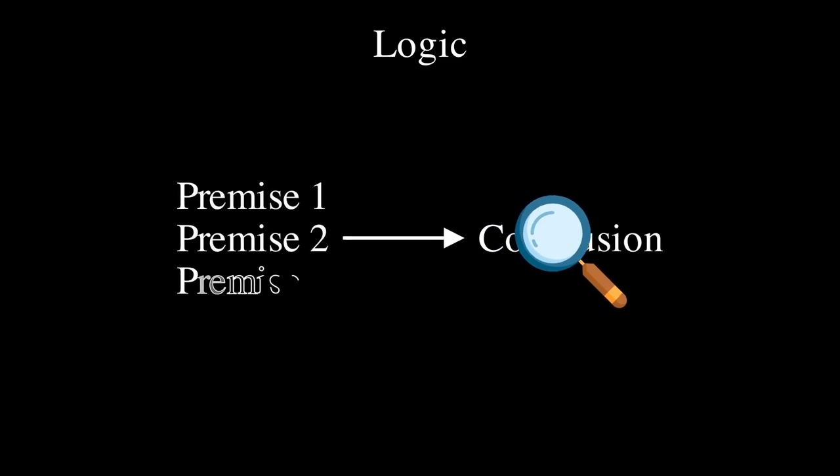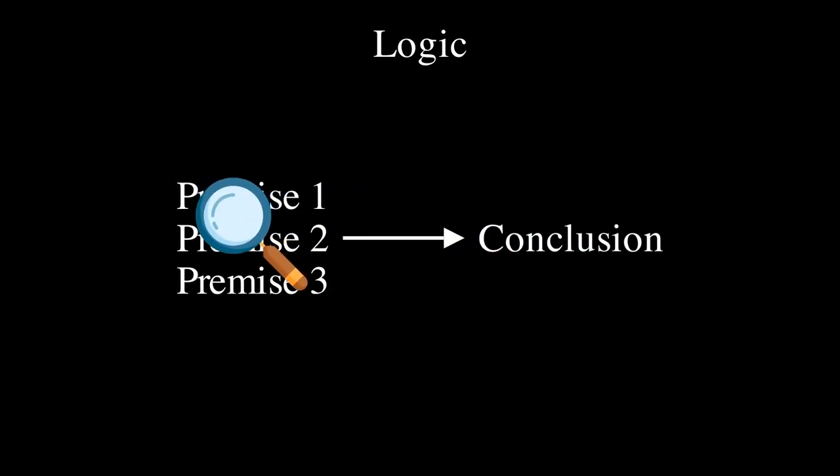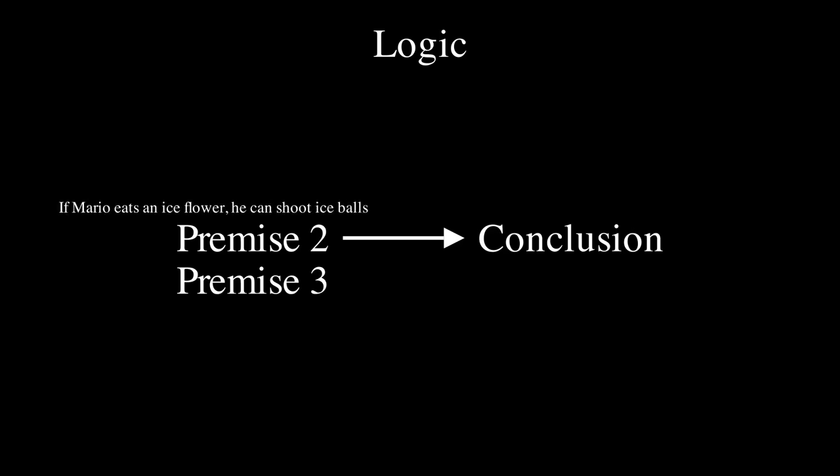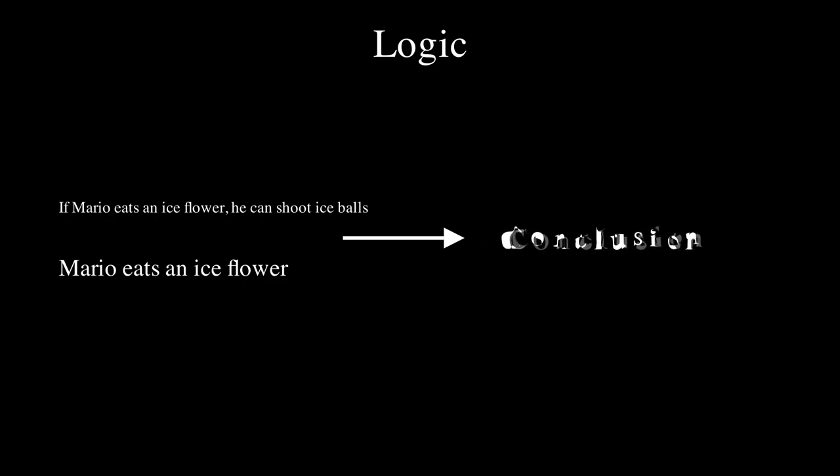Okay, so enough already, what is logic? Logic is the science of deductive reasoning. In other words, it's just a tool that helps us to come to conclusions given a set of assumptions. For example, let's consider the following statements. If Mario eats an ice flower, he can shoot ice balls. Mario eats an ice flower. What can we now deduce? Well, we can deduce that Mario can shoot ice balls. This is what logic is all about. It's about deducing new statements from existing ones.